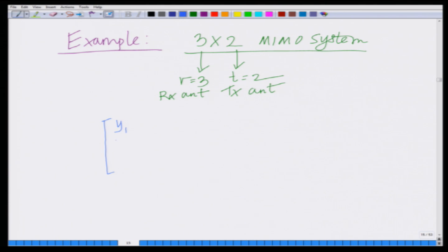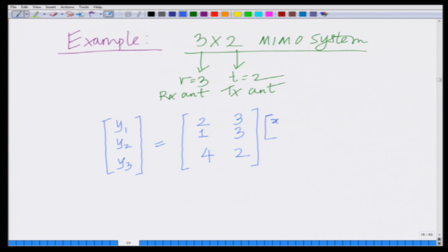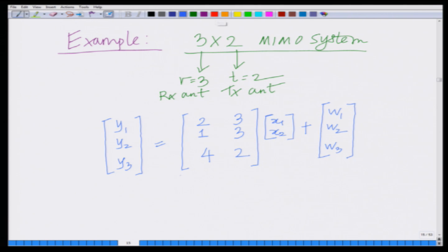The system model is given as [y1, y2, y3] equal to the channel matrix H = [[1,3],[2,3],[1,3],[4,2]] — a 3×2 matrix — times the transmit vector [x1, x2] plus noise [w1, w2, w3]. This is a 3×2 channel matrix since we have 3 receive antennas and 2 transmit antennas.